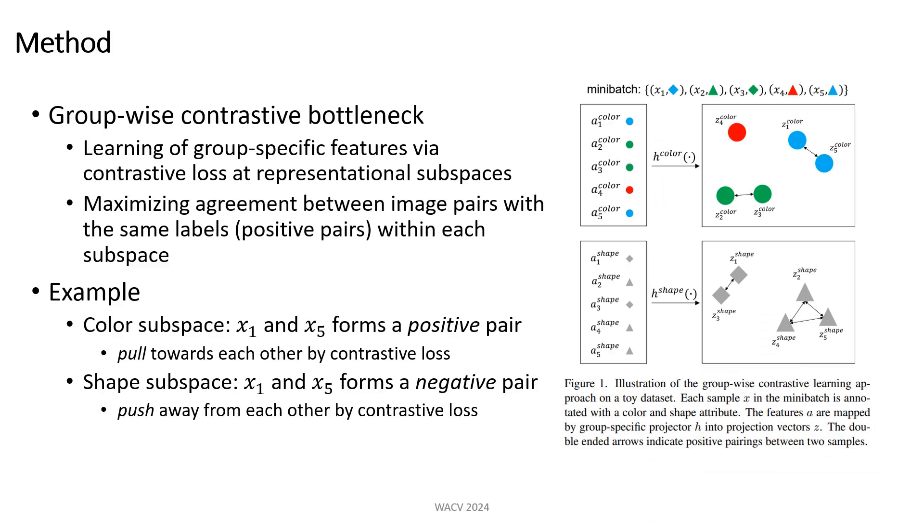To model this semantic grouping of weak labels, we propose a groupwise contrastive bottleneck module which projects an image into multiple representational subspaces. Within each subspace, group-specific features are learned by maximizing the agreement between pairs of images that share the same weak labels in the specific semantic group.